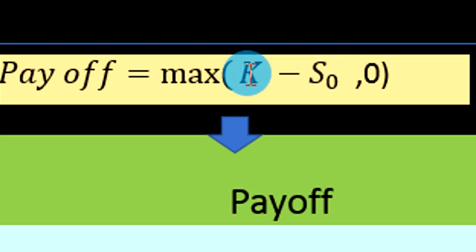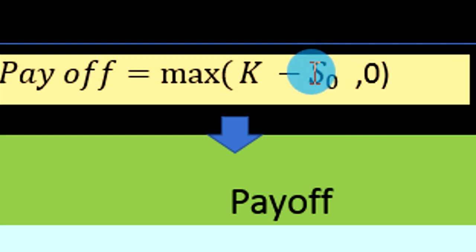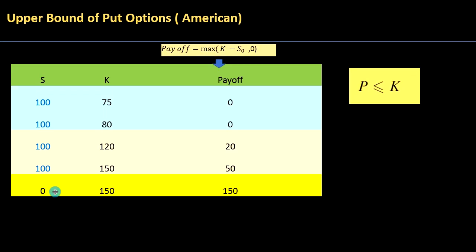For a particular put option, once you purchase it, the strike is constant because it's part of the contract. So if the underlying stock price keeps going down, the put option becomes valuable. The maximum value a put option could take is when the underlying price is zero. For example, if the strike is $150 and the stock price crashes to almost zero, the payoff is $150 — you can sell the stock to your counterparty for $150 even though it's worth zero in the market.